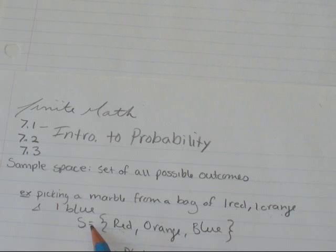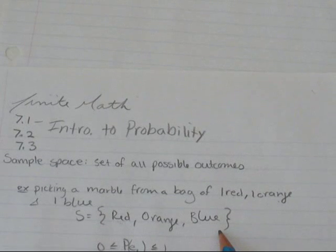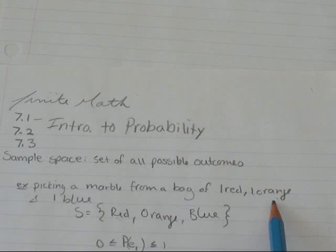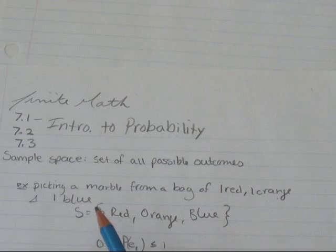S, my sample space, equals, in curly brackets, all possible outcomes. It's possible that I pick a red marble, it's possible that I pick an orange marble, and it's possible that I pick a blue marble.